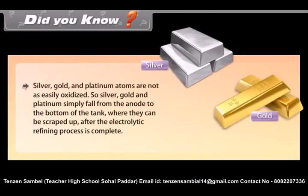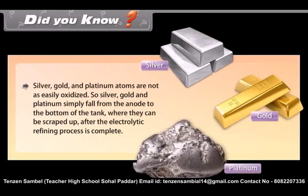Silver, gold and platinum atoms are not easily oxidized. So, silver, gold and platinum simply fall from the anode to the bottom of the tank where they can be scrapped up after the electrolytic refining process is complete.